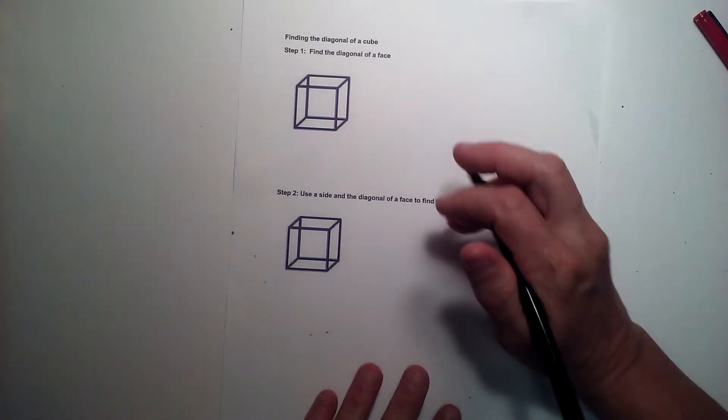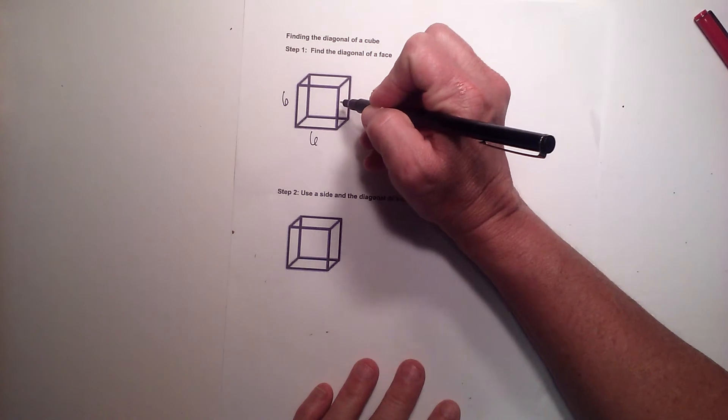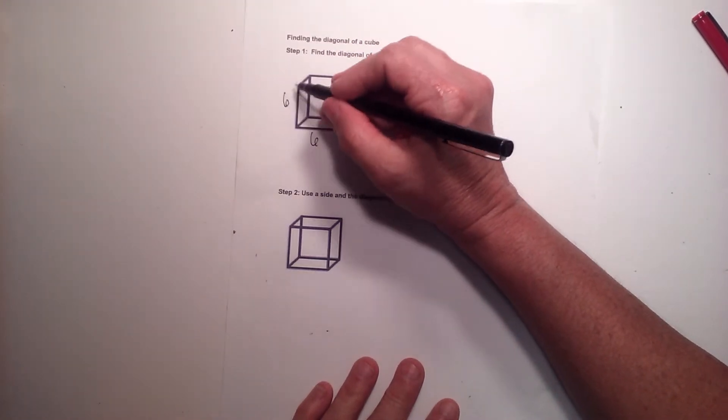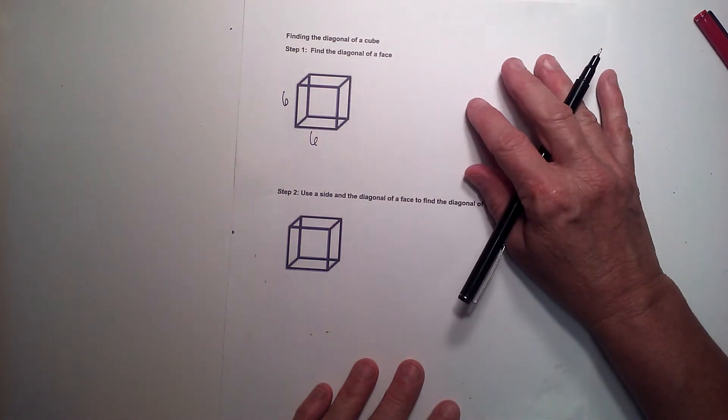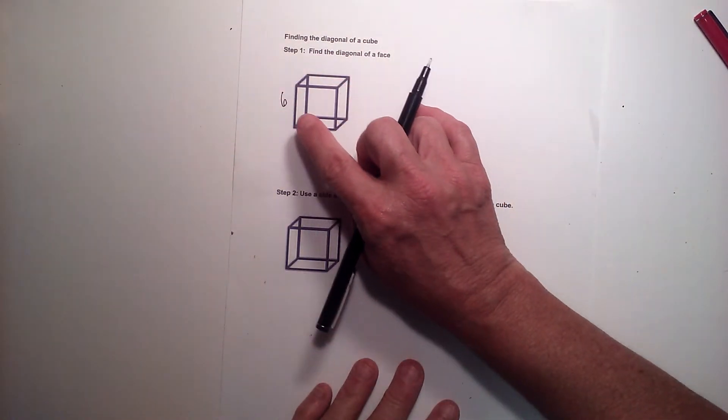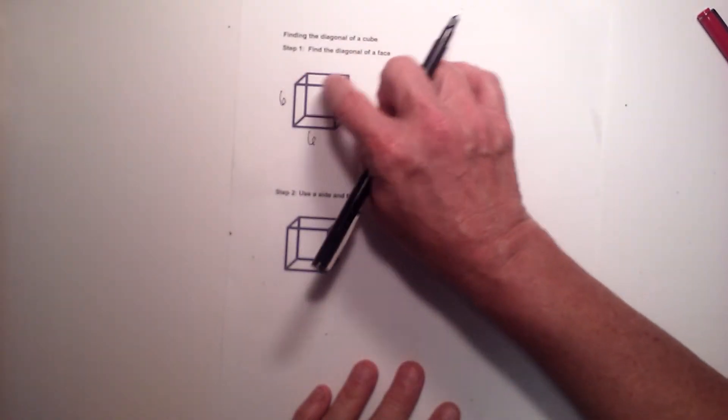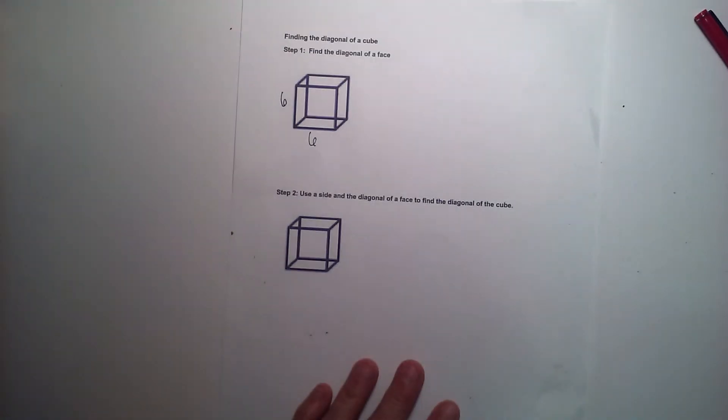So let's start with a cube with a side of six. So if the side of one side of a cube is six, we know the base has to be six because it is a cube, and by definition a cube has all twelve edges that have to measure six.